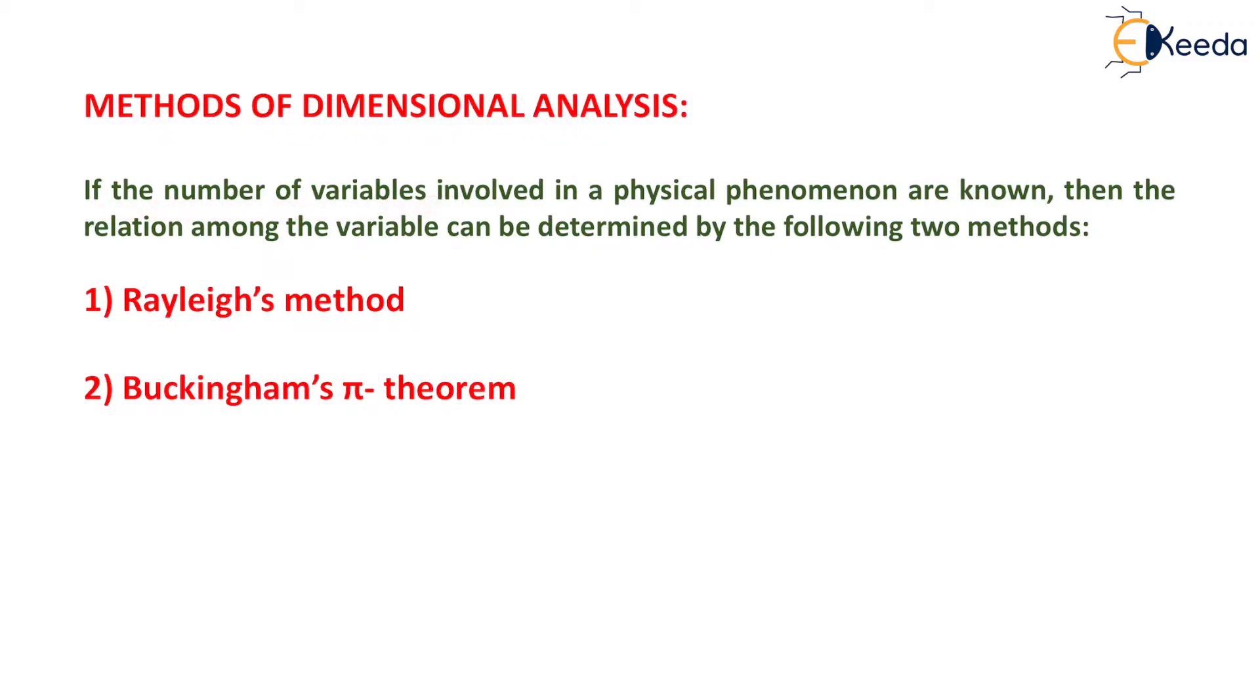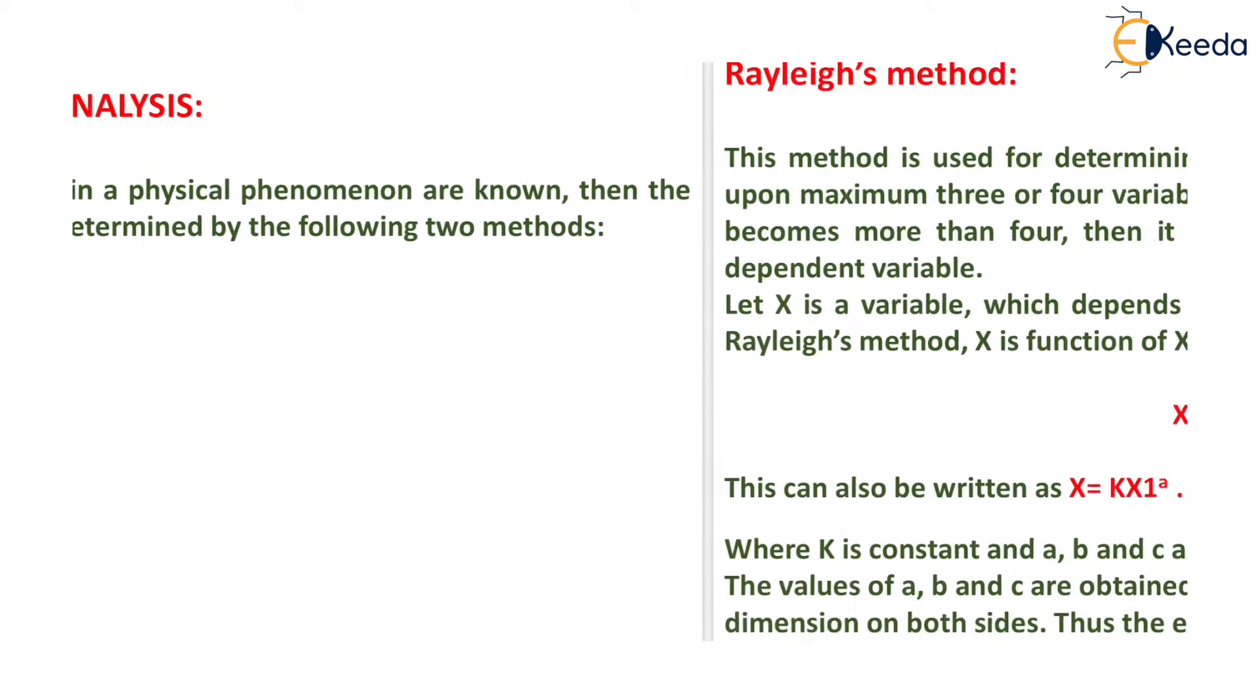The relation among the variables can be determined by the following two methods: Rayleigh's method and Buckingham's Pi theorem. Now the first method is Rayleigh's method.